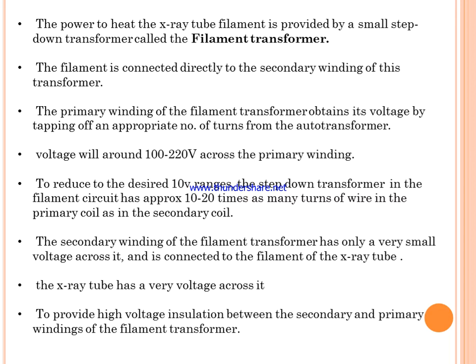Power to heat the X-ray tube filament is provided by a small step-down transformer called the filament transformer, and the filament is connected directly to its secondary winding. The primary winding obtains voltage by tapping off an appropriate number of turns from the auto transformer — around 100 to 220 volts. The step-down transformer in the filament circuit has approximately 10 to 20 times as many turns in the primary coil as in the secondary coil.